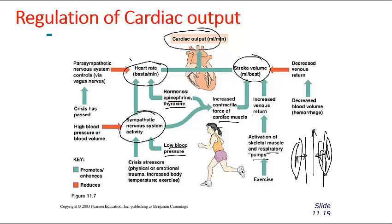Excess calcium can lead to spastic heart contractions — an undesirable, unnatural condition. However, calcium also increases stroke volume by enhancing the contractility of the heart's compartments, allowing a greater amount of blood to rush out and causing cardiac output to rise. These are the different regulatory measures that control cardiac output. The body decides whether to increase or decrease cardiac output based on its physical condition and state, in order to maintain healthy homeostasis.